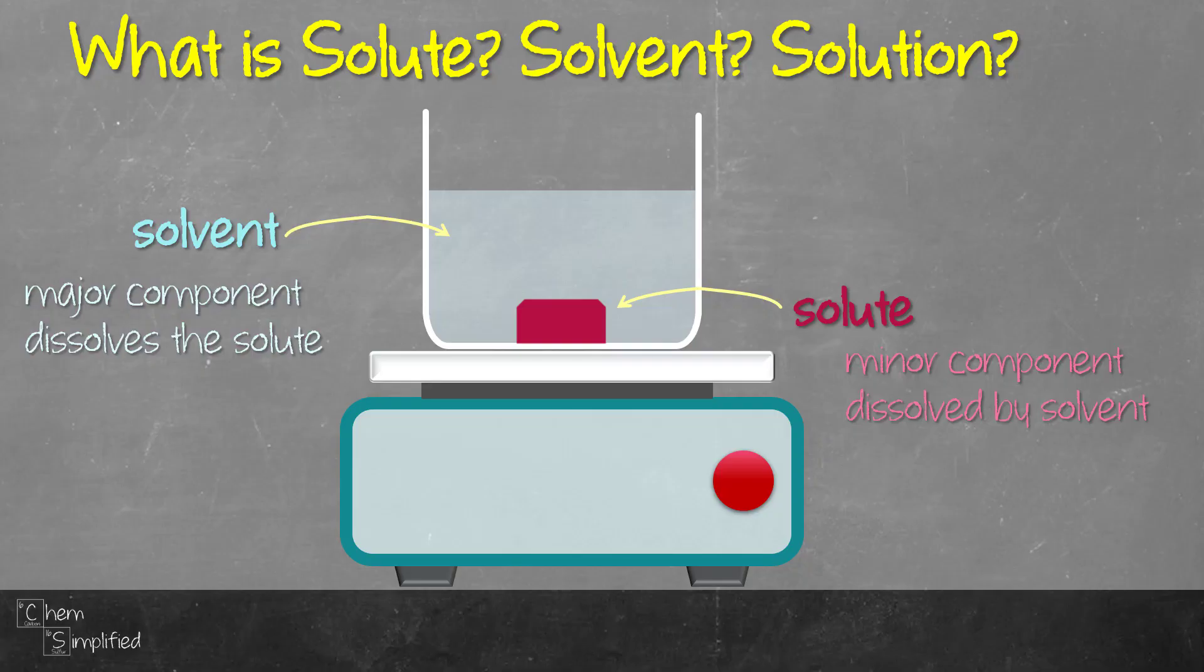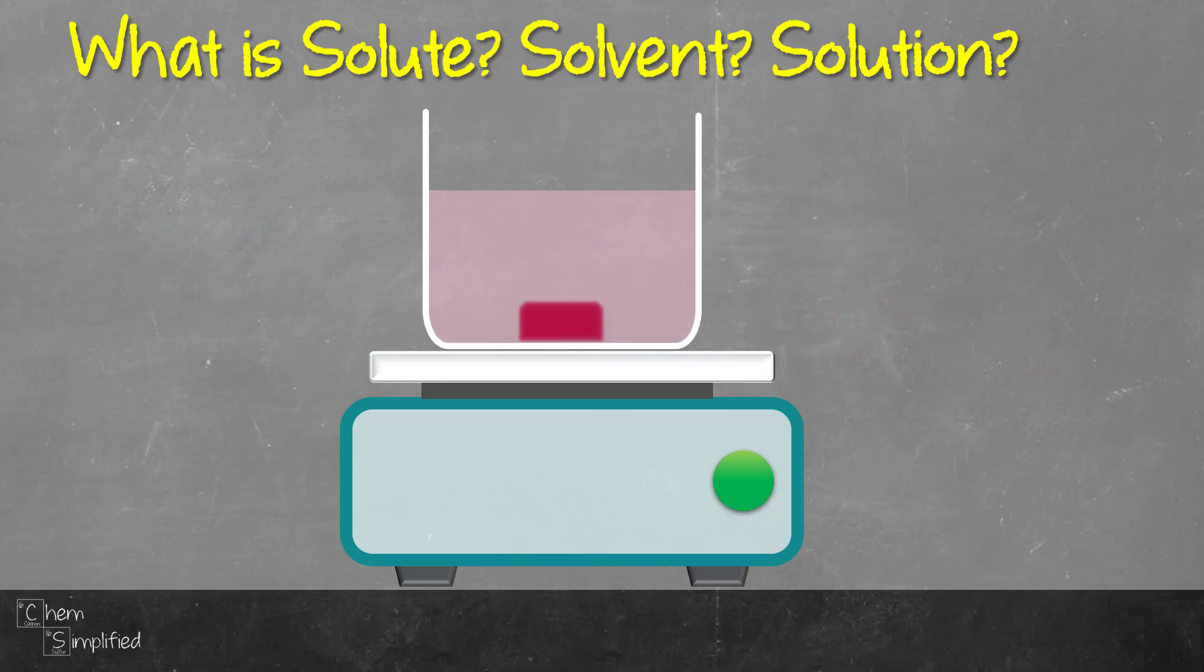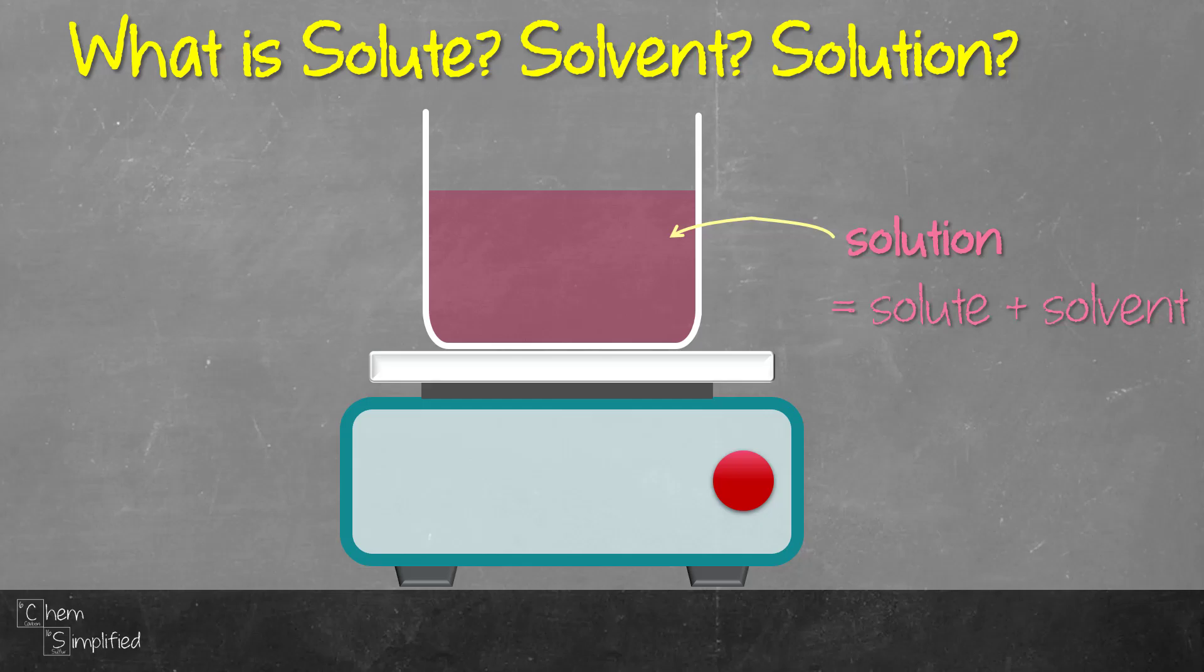Now when we mix these two together, in time, the solute is going to slowly dissolve and then it will form a solution. So basically, a solution is a mixture of solute plus solvent. It's a homogenous mixture.